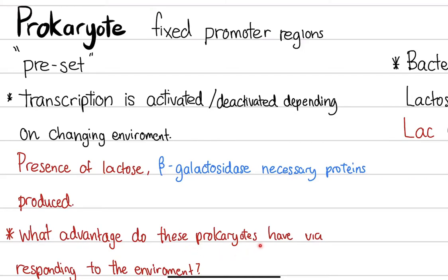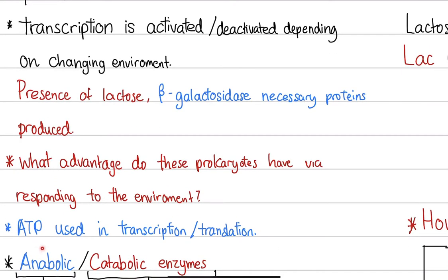The advantage this gives to prokaryotes is the efficient use of ATP. ATP is a very scarce resource — it's not unlimited — so the cell has to decide where it invests its energy, and it does that by understanding its environment.